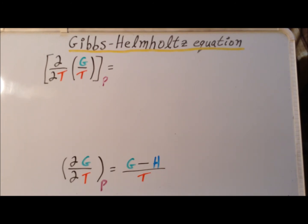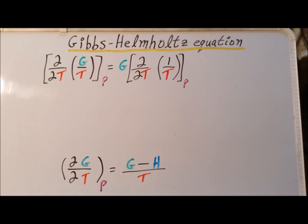As a first step to it, let us imagine that G divided by T is the product of two functions. One function is the function G. The second function is 1 over T. And we will use the product rule to differentiate G over T. As the first step in the derivative, we take the function G and we multiply it by the derivative of 1 over T. So formally, this is the derivative with respect to T of 1 over T at constant pressure.